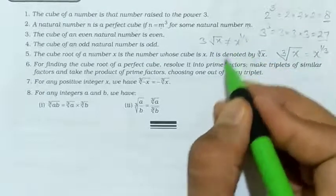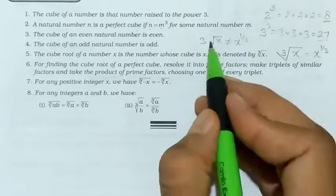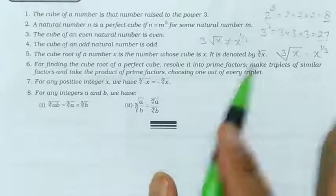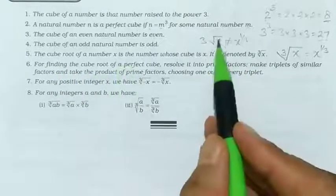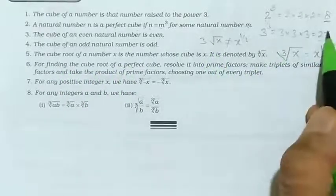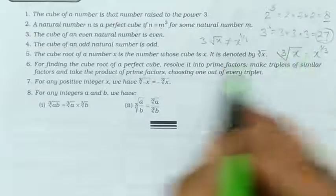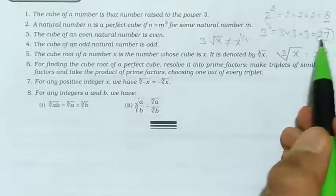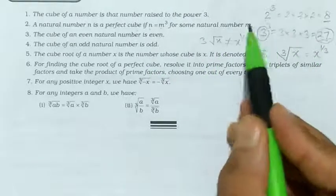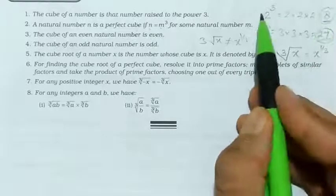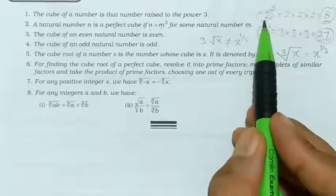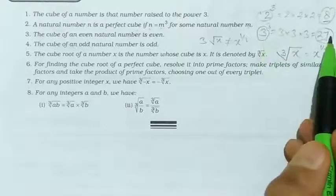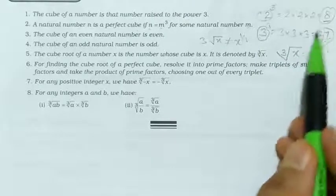So in the case of cube root, you have to write the 3 inside the sign — that is clear. For example, the cube root of 27: 27 is x here, and the cube root of a number x is the number whose cube is x. Cube root of 8 is 2 because 2 cube is 8, and cube root of 27 is 3 because 3 cube is 27.